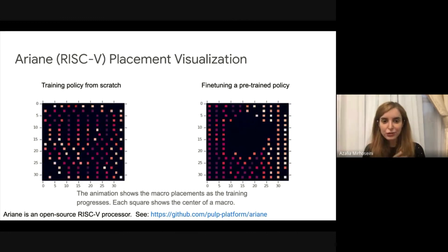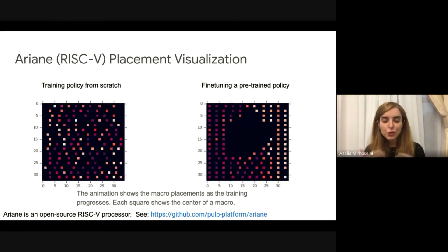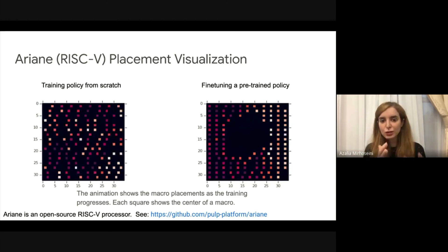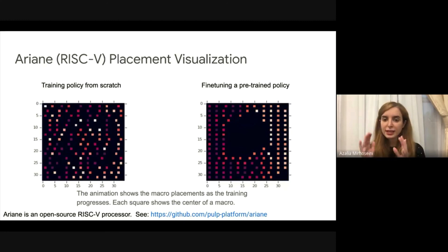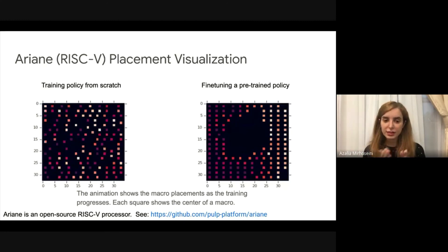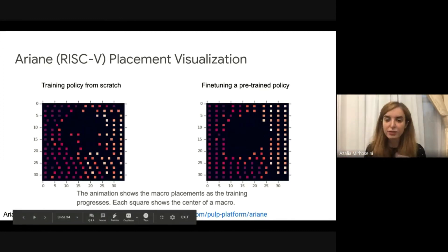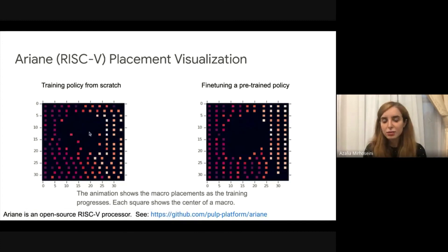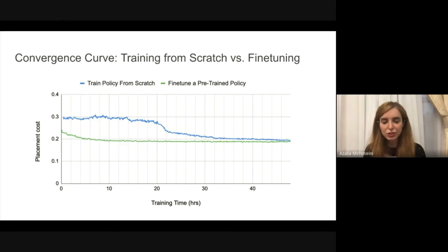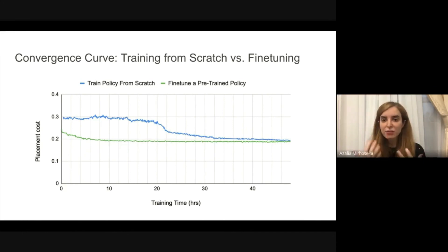Here is an example showing how generalization works. On the left, the policy is trained from scratch to do the placement. On the right, we take a pre-trained policy and apply it at inference on the nodes of a RISC-V processor. The pre-trained policy right at the beginning finds good structure — placing nodes around the canvas and leaving area for standard cells in the middle — whereas the other policy takes more time to reach that. Data shows we need 30 more hours of training from scratch to get what the pre-trained policy achieves almost immediately, and the pre-trained policy also achieves higher quality results.